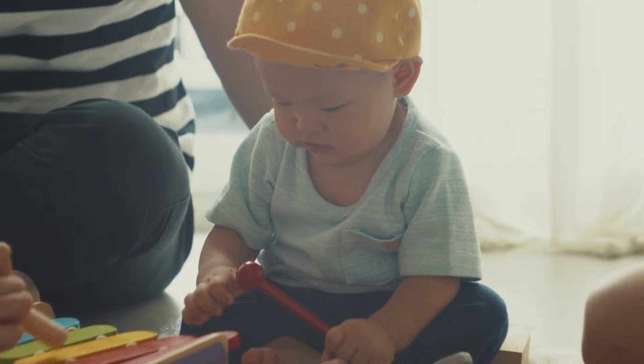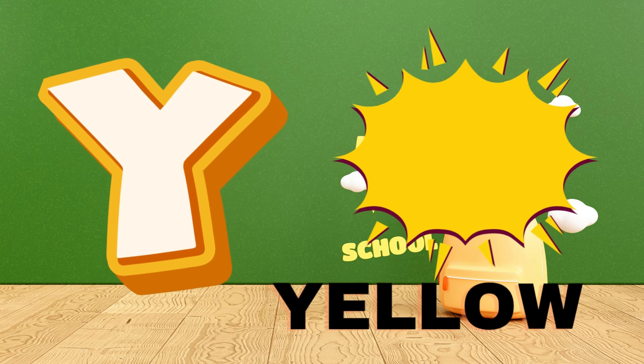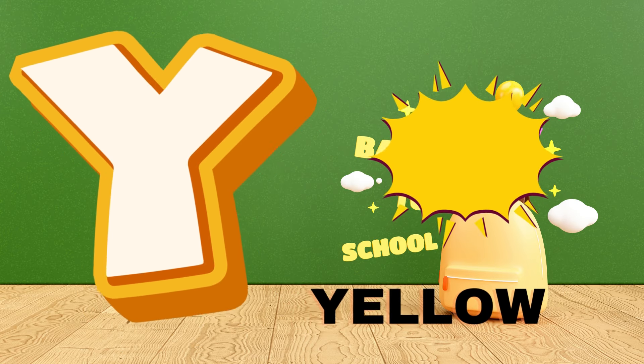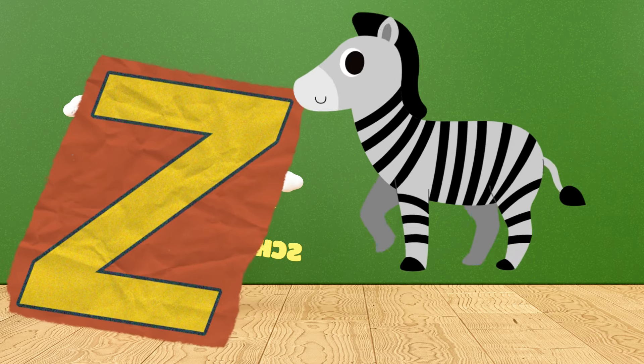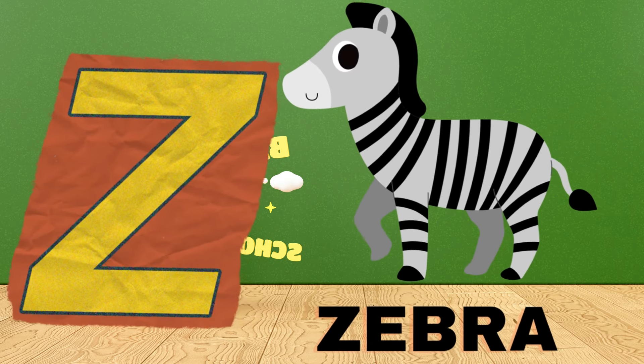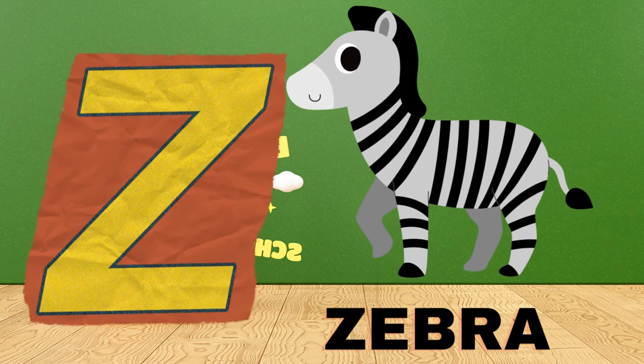Y is for yellow, y-y-yellow. Z is for zebra, z-z-zebra.